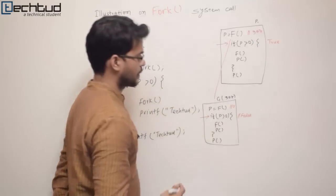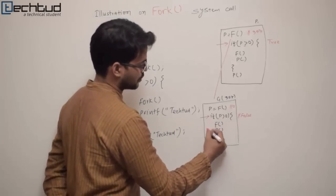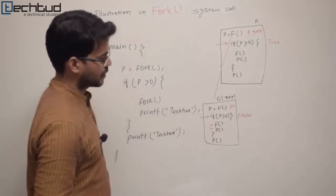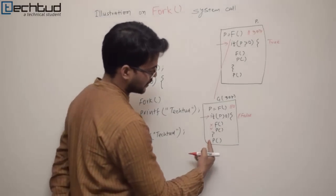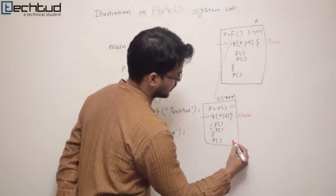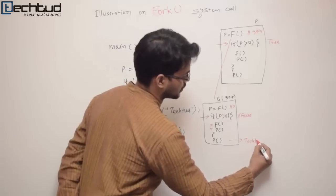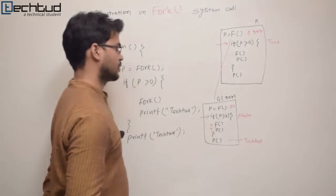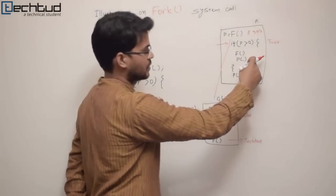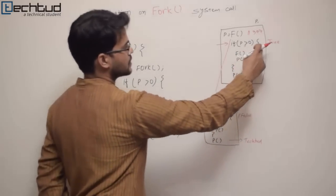Since the condition is false for the child, the instructions inside the if block are not executed at all. The child directly executes the final print statement and prints 'tikted'. But for the parent, the condition is true, so it will start executing the inner code of the if statement.